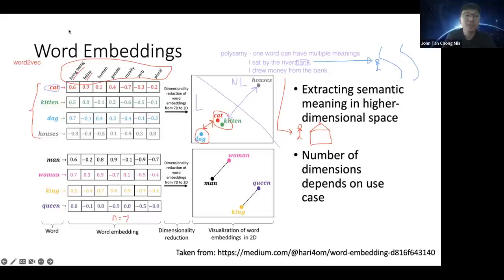Word embeddings are, in my opinion, the key reason why Transformers work — because they are so informative and actually capture the meaning of whatever text you want to generate.